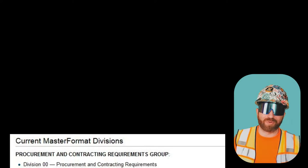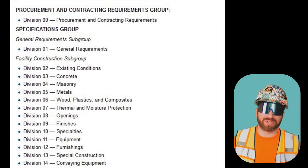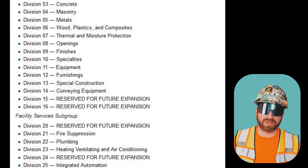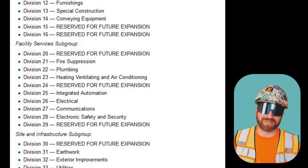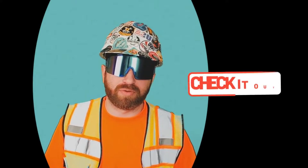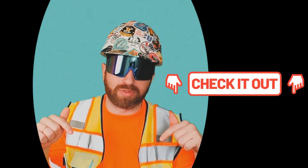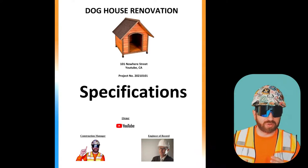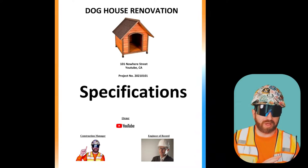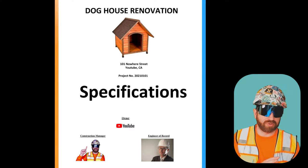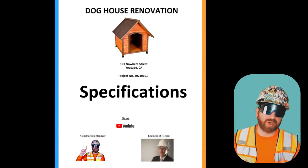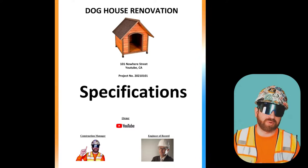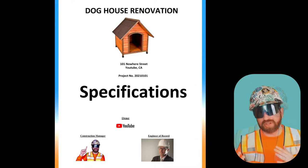The CSI master format is broken up by division numbers and their corresponding scope descriptions. I'll drop more information in the video description below with each of these division numbers and names. But remember, not every project is the same, so one project may have certain division numbers that another does not, and those specs within those divisions may change based on the requirements of that project.